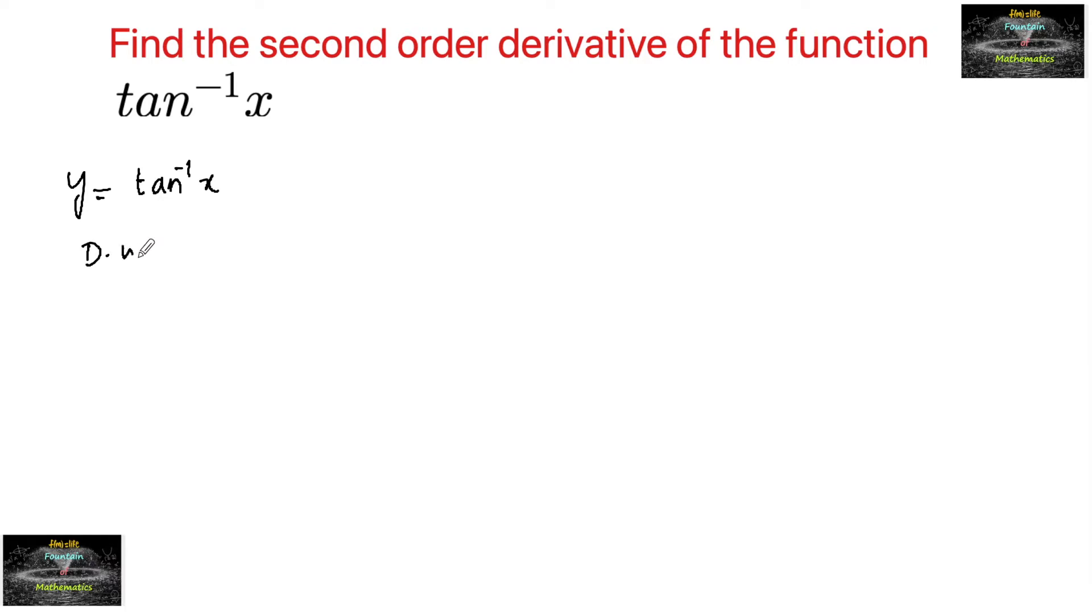So now differentiate with respect to x. We have dy by dx is equal to, differentiation of tan inverse x is 1 upon 1 plus x square.